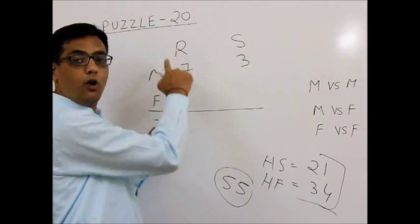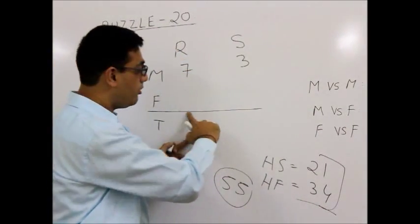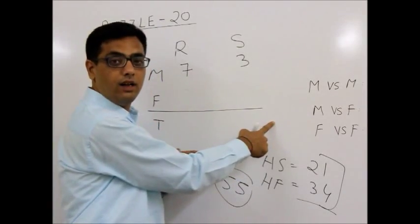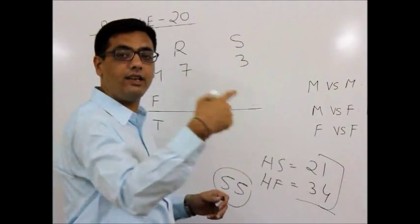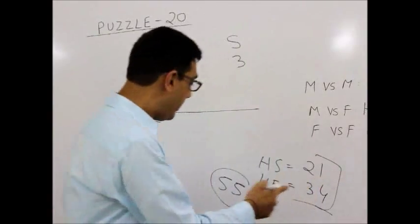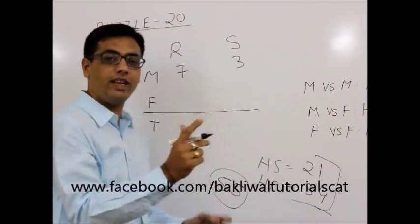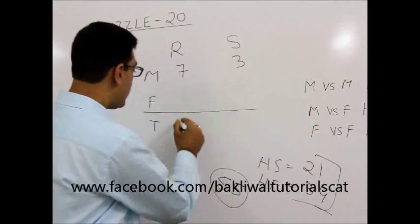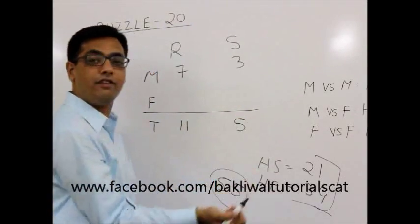And since each person of Ramlal family is doing some gesture with the other person in the Shablal family, this 55 also can be written in exactly one way, which is 11 into 5, 55.